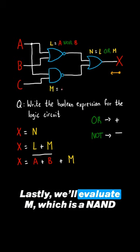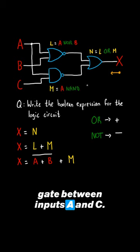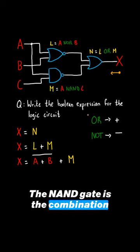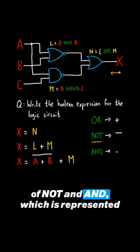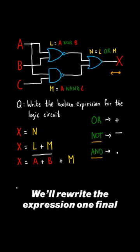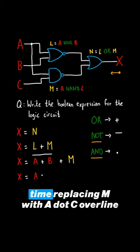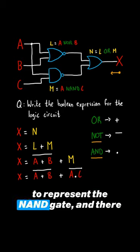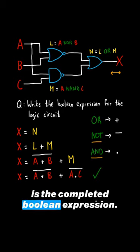Lastly, we'll evaluate M, which is a NAND gate between inputs A and C. The NAND gate is the combination of NOT and AND, which is represented with the dot. We'll rewrite the expression one final time, replacing M with A dot C overline, to represent the NAND gate. And there is the completed boolean expression.